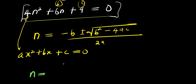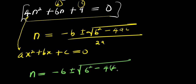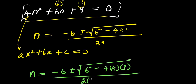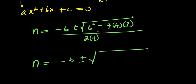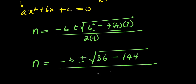Substituting, n equals negative 6 plus or minus square root of (6² minus 4 times 4 times 9) divided by (2 times 4). That is negative 6 plus or minus square root of (36 minus 144) divided by 8.